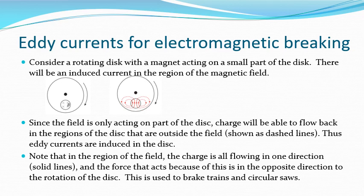Another use is eddy current braking, used in some trains and Formula 1 cars. A rotating disc passes near a small magnet; the movement within the magnetic field produces tiny eddy currents within the disc. These eddy currents in turn create a magnetic field that opposes the motion, causing the disc to slow and stop. This principle is also used to stop saw blades from turning.